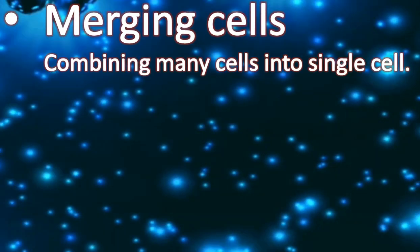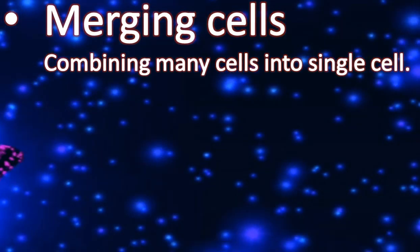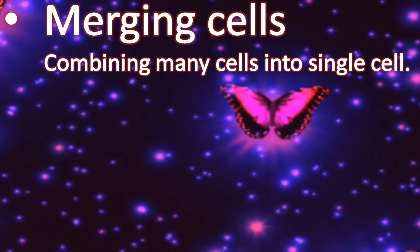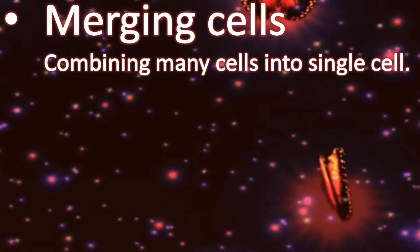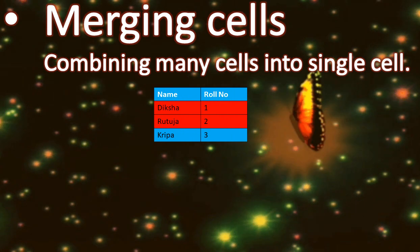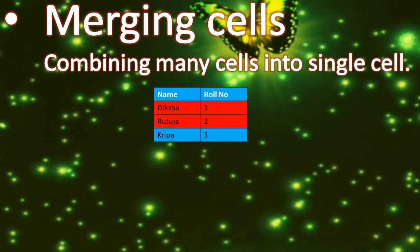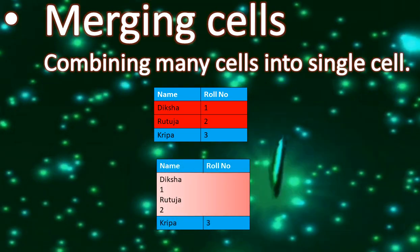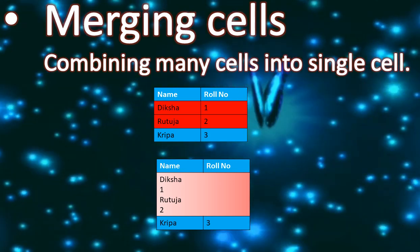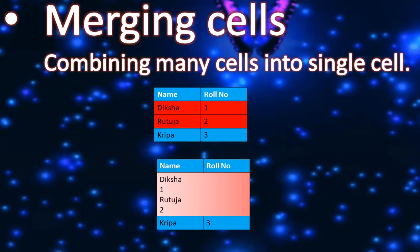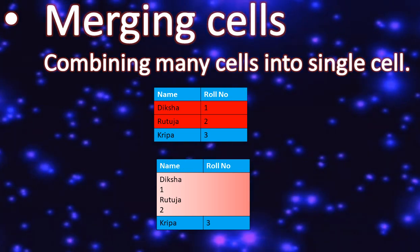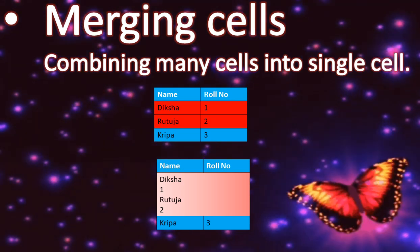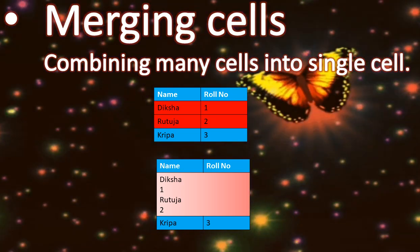Next is merging cells, which is the opposite of splitting. In splitting you divide a single cell into many cells, but in merging you combine many cells into a single cell. In this table the red highlighted cells are merged. After merging, those four cells are combined into a single cell and their data is also merged together.